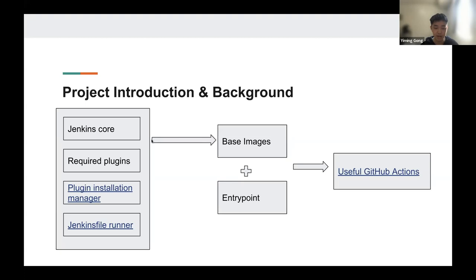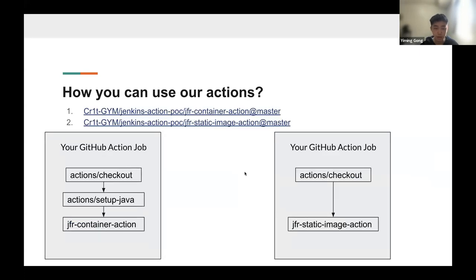Looking at the picture, here is the basic architecture of these actions. I combine the Jenkins core, a minimum required set of plugins to run the pipeline, plugin installation manager, and the Jenkins file runner into a base image. I then set up the entry point shell scripts to start up the container workflow. I provide two Jenkins file runner actions in my project: one is called JFR container action and another is called JFR static image action.